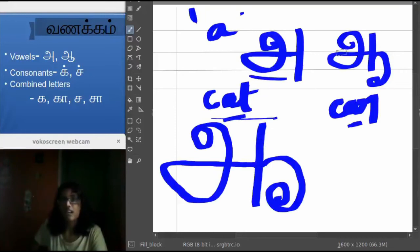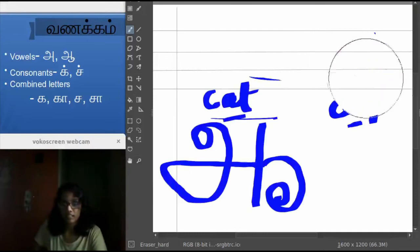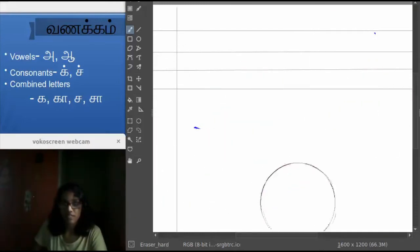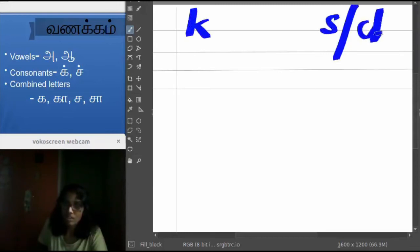And coming to the next, we will see consonants. We have two consonants here. The first consonant is K sounded, and the second one is S sound or Ch sound.